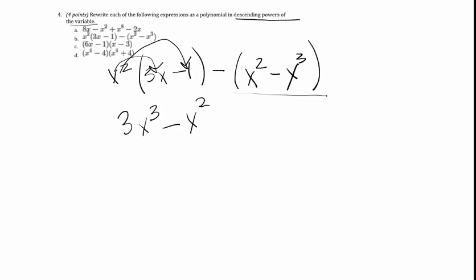Then for this second part, all we do is say, well I have a minus sign here, so that means I have to do minus x squared, and then a minus and a minus make a plus. So it's actually going to be plus x cubed.